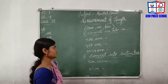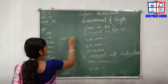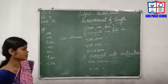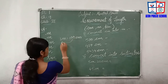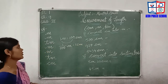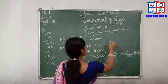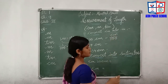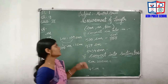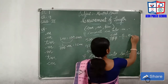Now, convert centimeters to meters. Here the question is given in centimeters and you have to convert it into meters. One meter equals 100 centimeters. So 1 centimeter equals 1/100 of a meter. To change centimeters into meters, we have to divide by 100. For example, 500 divided by 100 — the answer is 5 meters. So 500 centimeters equals 5 meters.